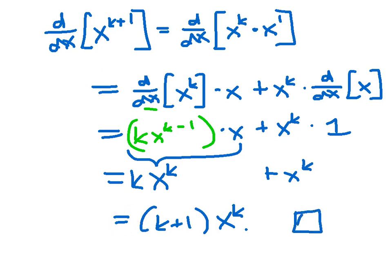That is the end of the proof. We've done the base case, which was simple, and we've completed the inductive step — assuming the power rule is true for n = k and proving it's true for n = k + 1. So we've climbed the calculus staircase and actually proven the power rule. Note that if you want to prove the power rule for non-integer powers, like x^(3/2), you'd need a completely different proof. But this induction proof establishes it for positive integer powers of x. Congratulations!